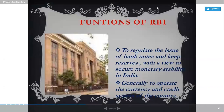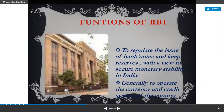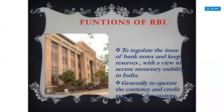The first function is currency authority, or note issuing. The RBI issues money to regulate the issue of bank notes and keeps reserves to secure monetary stability in India, and to operate the currency and credit system of the country. The central bank has sole authority for issuing currency. The Reserve Bank of India has the sole right to issue paper currency notes, except the one rupee note and coins, which are issued by the Ministry of Finance.